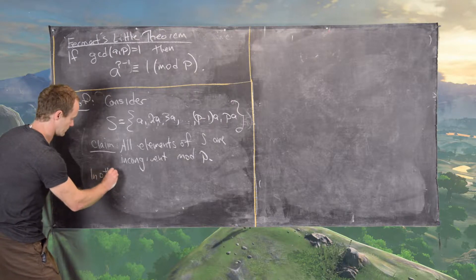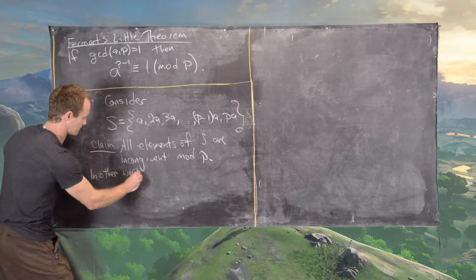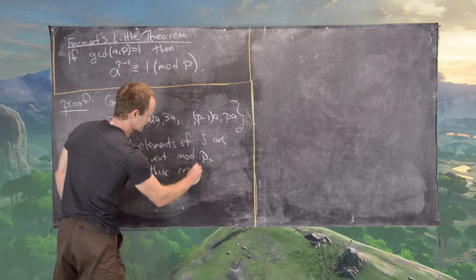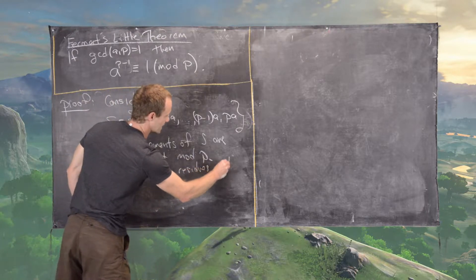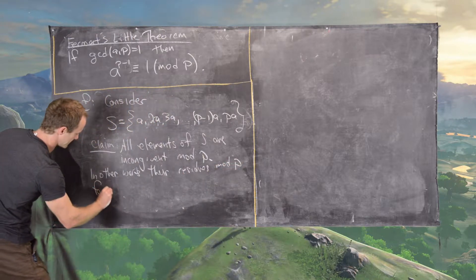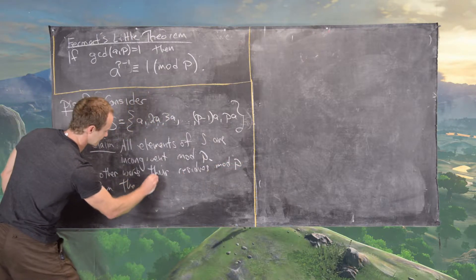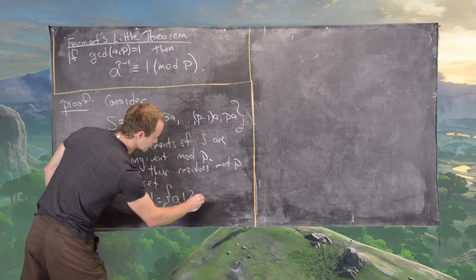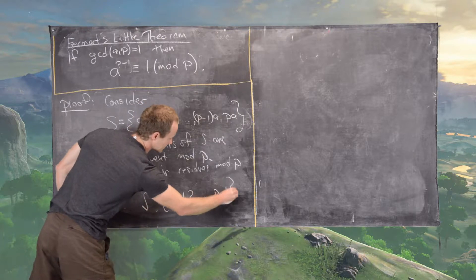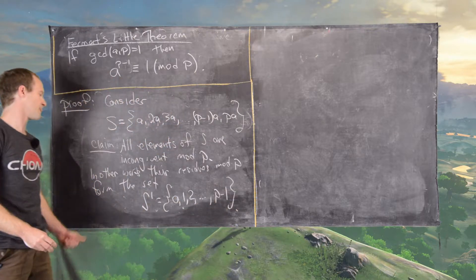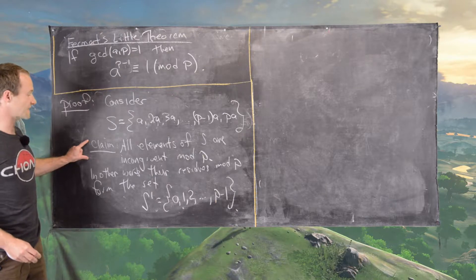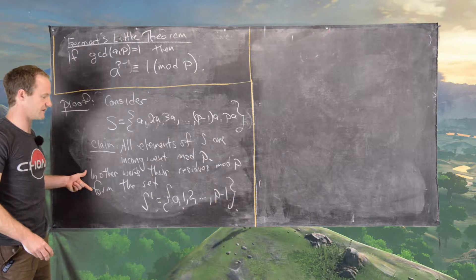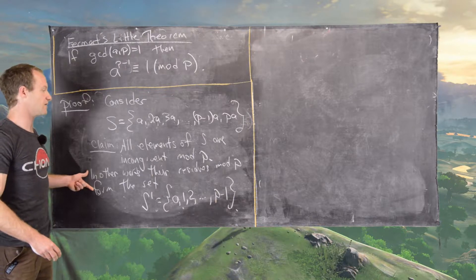So in other words, their residues mod P form the set, maybe we'll call it S prime, which is equal to 0, 1, 2, up to P minus 1. So that being said, we'll prove this claim as it's written here, and then this will be an equivalent statement for this claim that we'll use later in the proof.